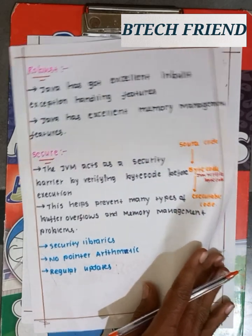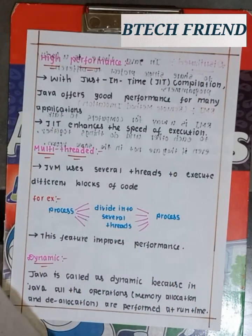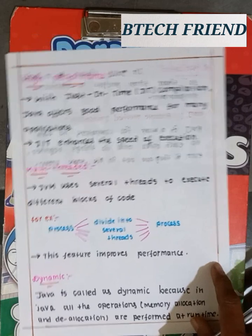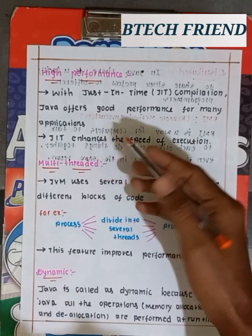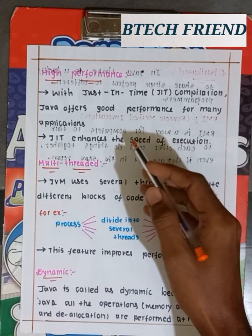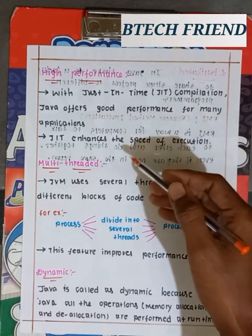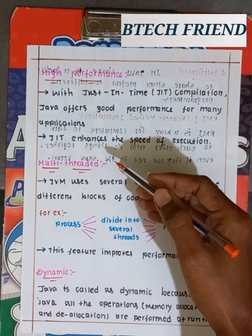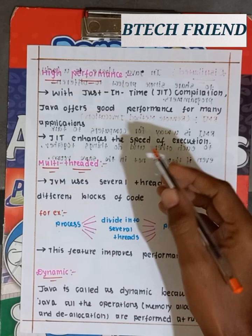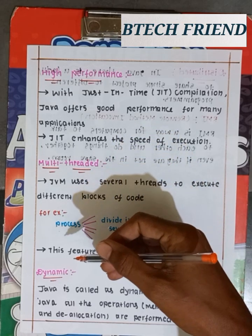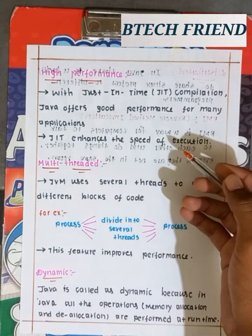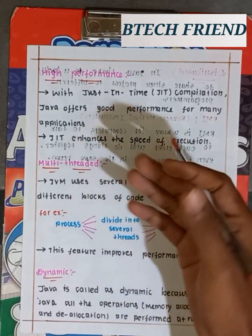With just-in-time compilation, Java offers good performance for many applications. Just-in-time compilation enhances the speed of execution. Java has high performance, achieved with the help of the just-in-time compiler, which enhances the speed of execution.